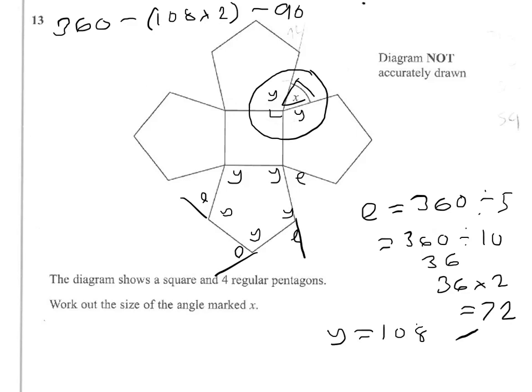So 108 times 2 is 216. 216 and 90 comes to 306. So we've got 360, subtract 306, leaves us 54. And that is our answer. We'll see you next time.